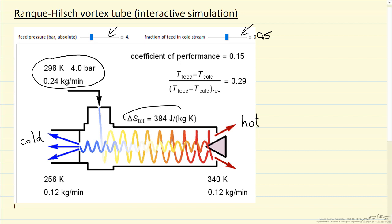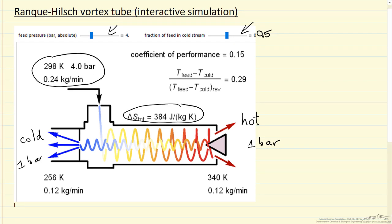And then here we're calculating the entropy change. The entropy change is positive, meaning the second law is also satisfied, and the main reason the second law is satisfied is that we undergo this pressure drop from four bar to one bar leaving for both cold gas and hot gas.